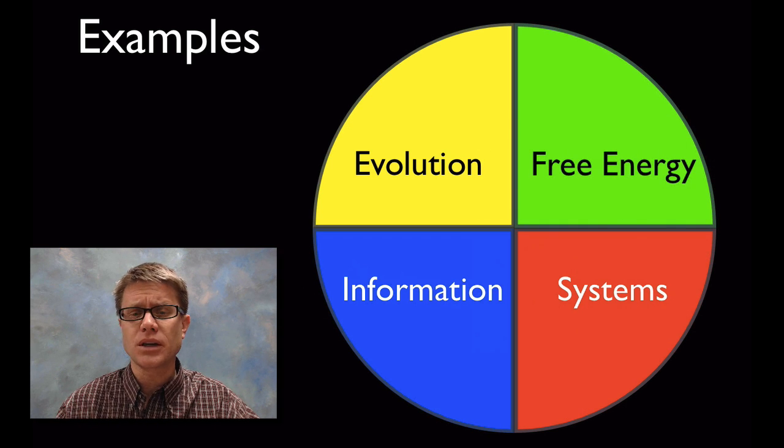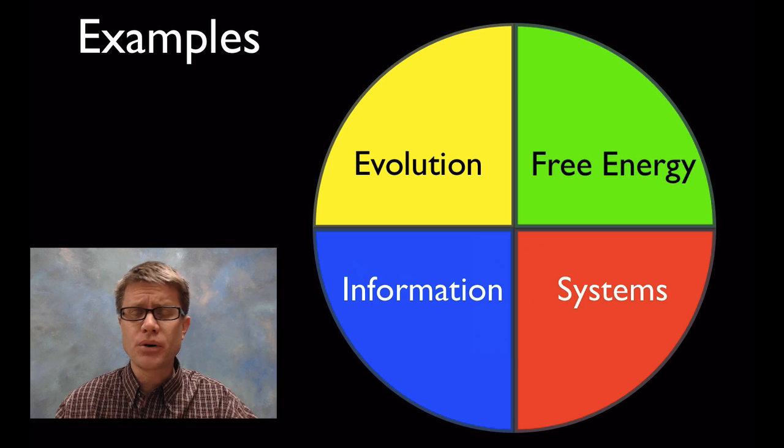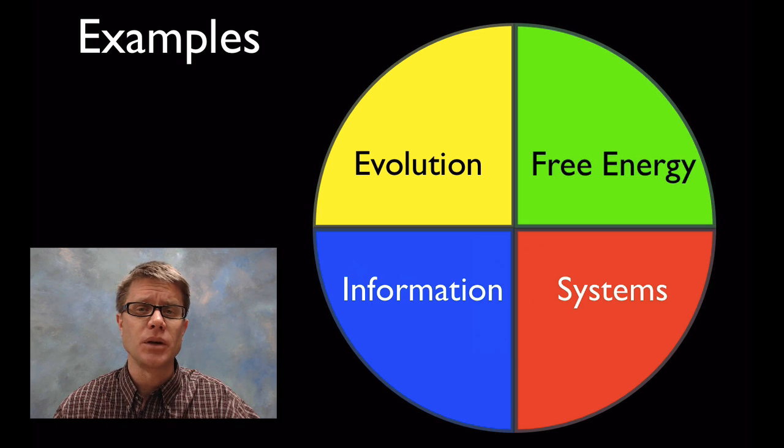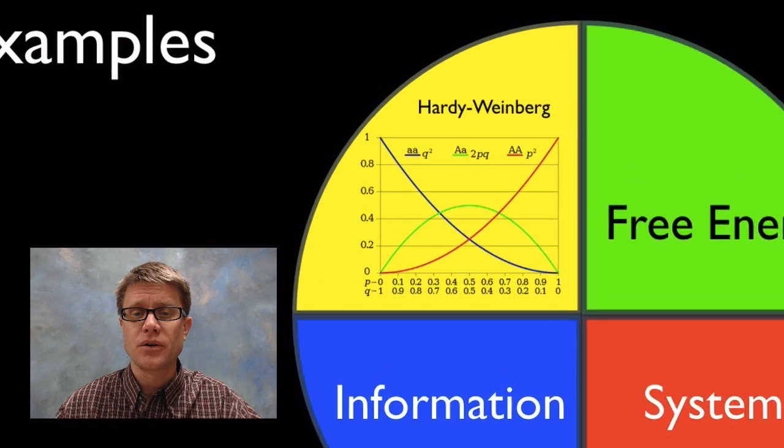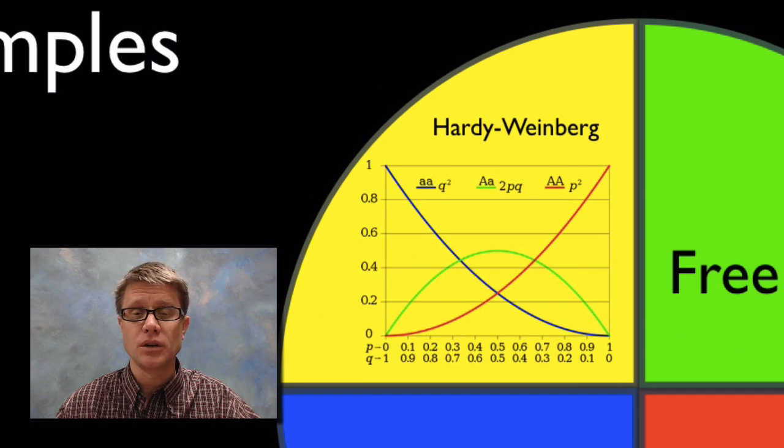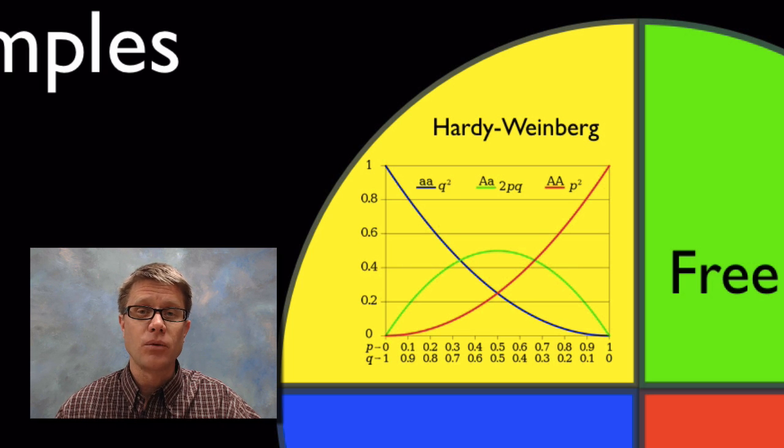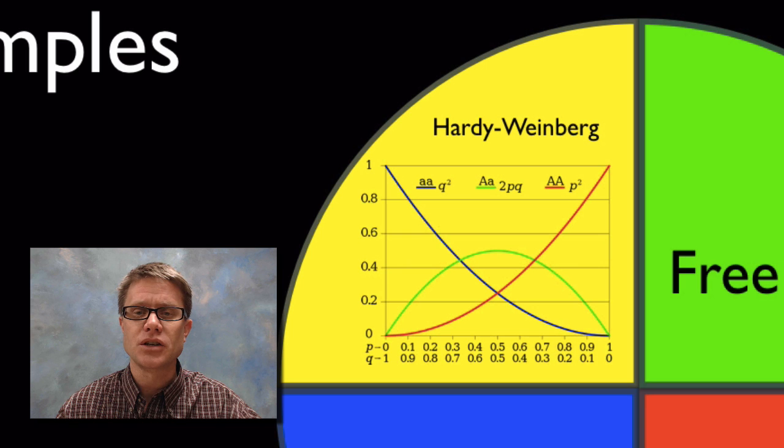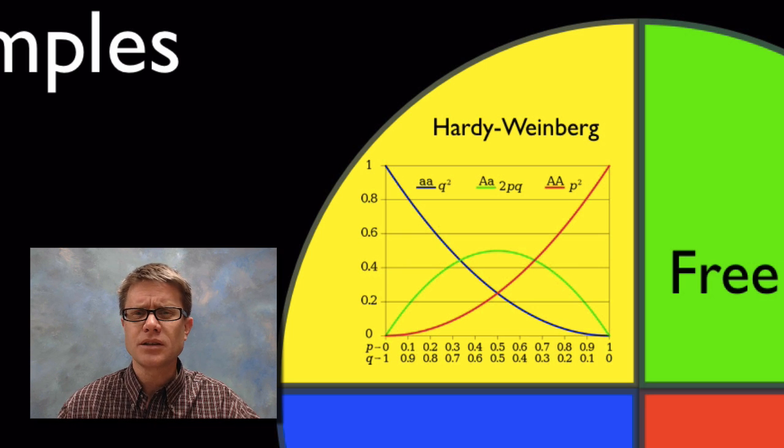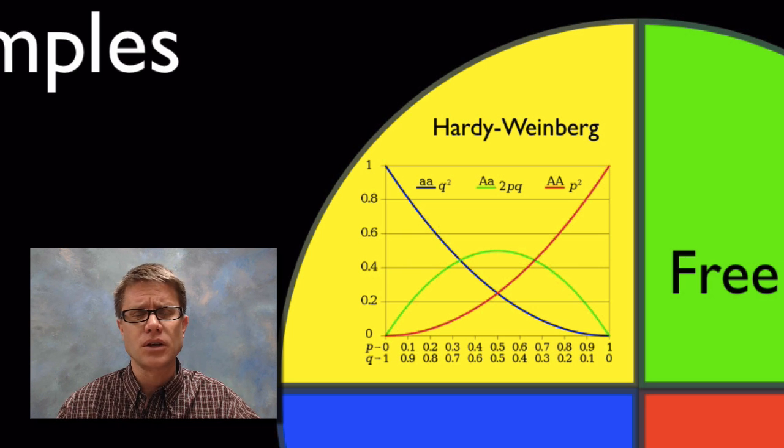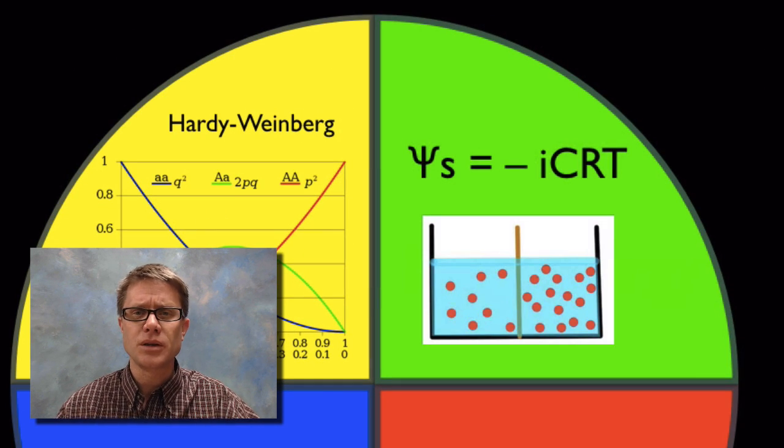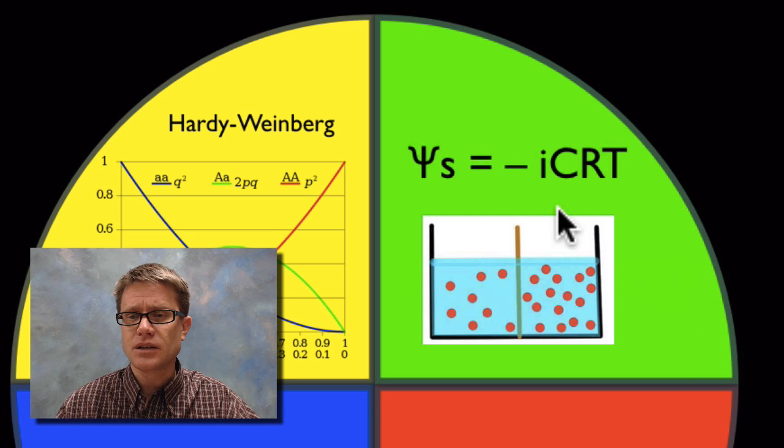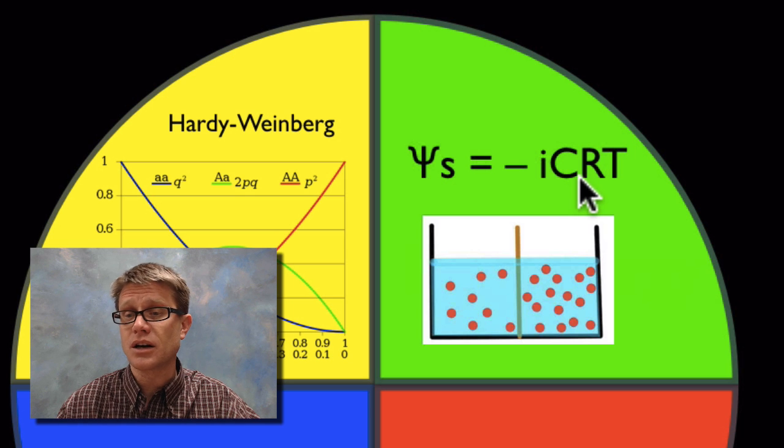Math is very important. In the new AP curriculum there are four pretty big, pretty important equations that you should be familiar with in each of the four different big ideas. I went through and chose one formula for each of these. In evolution I went with Hardy-Weinberg equilibrium. You should be able to apply that, figure out what the alleles are in a population based on making some measurements.